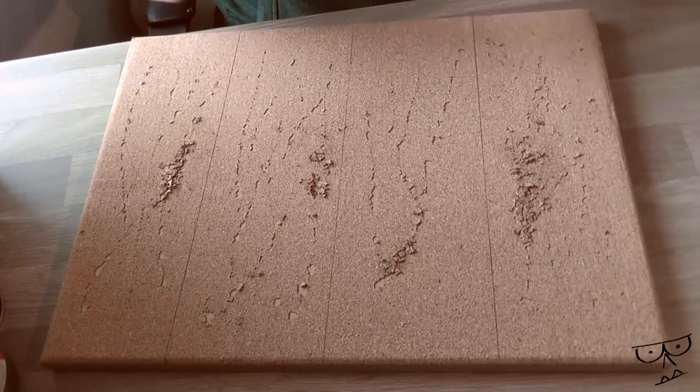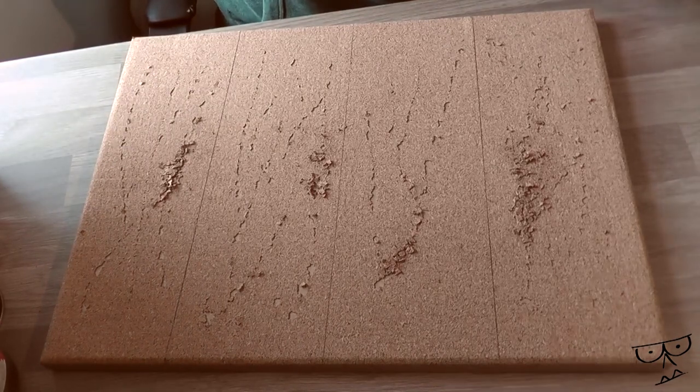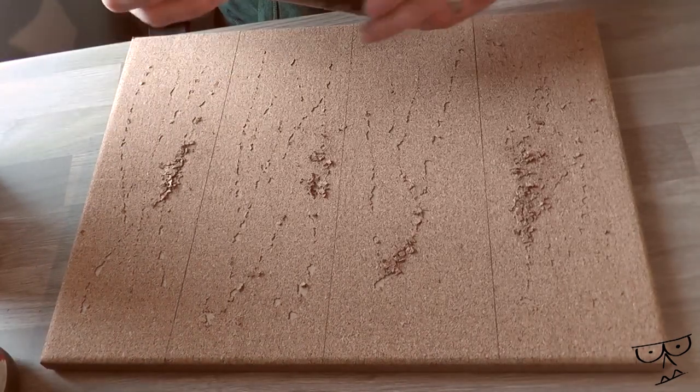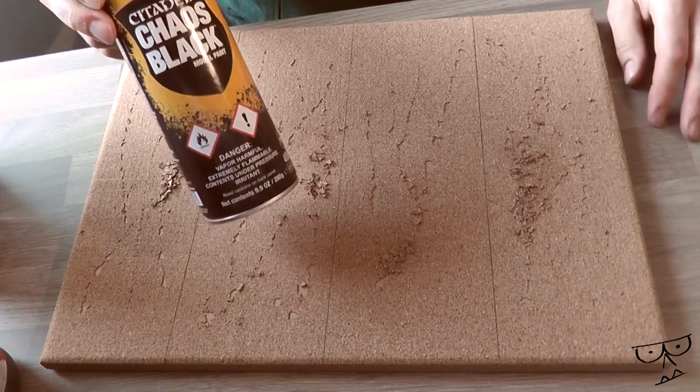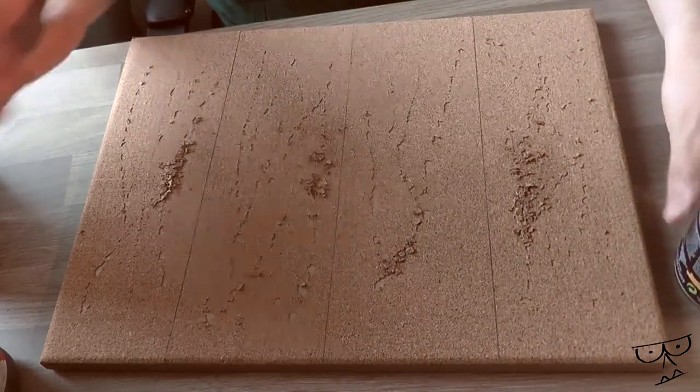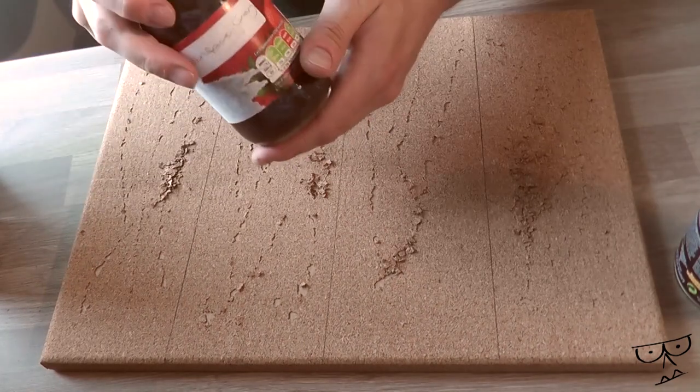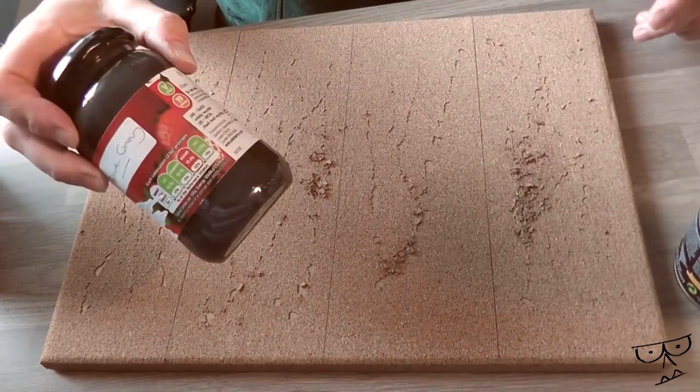Then I'm going to do four different tests. So the first one I'm going to spray it, prime it with Chaos Black, just a quick black primer on that one. I'm going to dry brush it. The next one I've got some stuff here which me and my son made, which is just grey paint and sand.